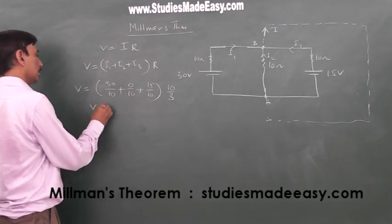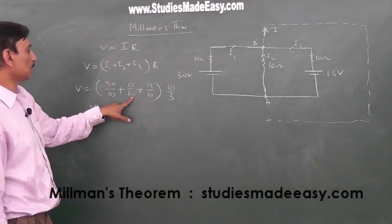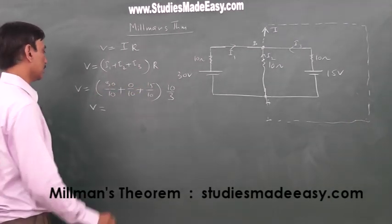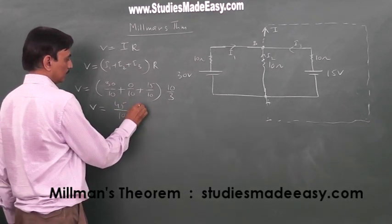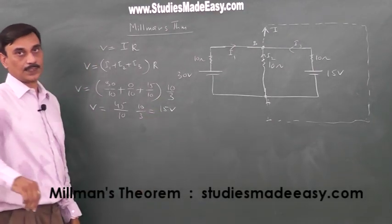So, V is, this is 30, this is 0, 45 by 10. Ten tends to cancel. Or let me write it as 45 by 10 into 10 by 3 equals 15 volts.